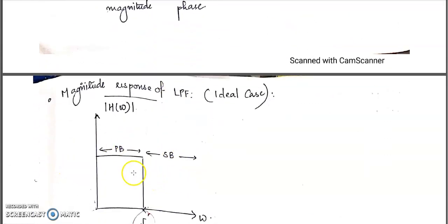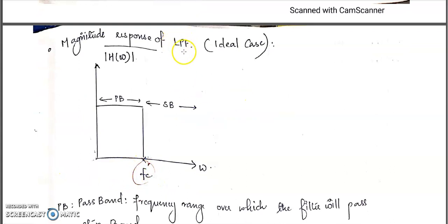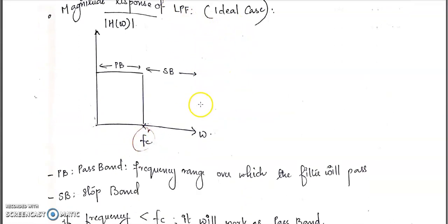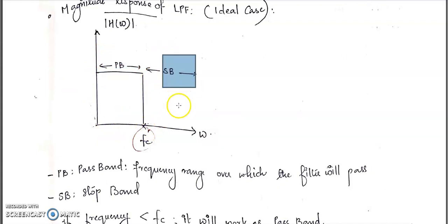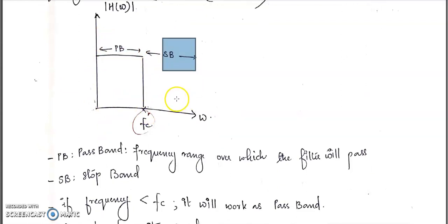If we plot the magnitude response of a low pass filter — considering the ideal case — the frequency range from 0 to fc is called the passband, and after fc it is called the stopband. The passband is the frequency range over which the filter will pass the signal, and the stopband is the frequency range over which the filter will not pass the signal.